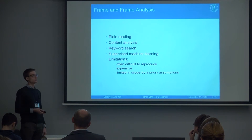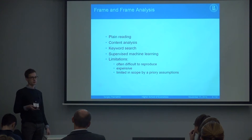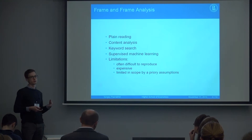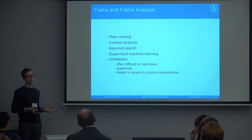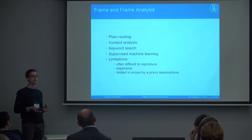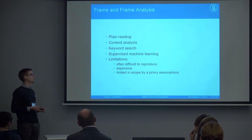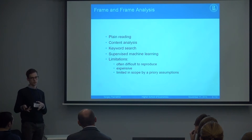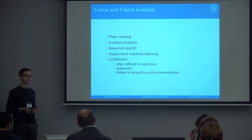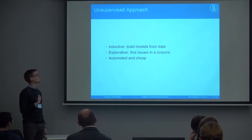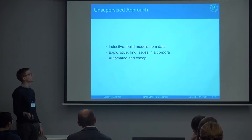All these methods have limitations. First, they are often difficult to reproduce, especially plain reading, where results highly depend on the person producing the analysis. They are also expensive because humans are needed to evaluate text and count things and find frames. By making a priori assumptions about what to look for in a corpus, the research is limited in scope — we might miss important content in our data.